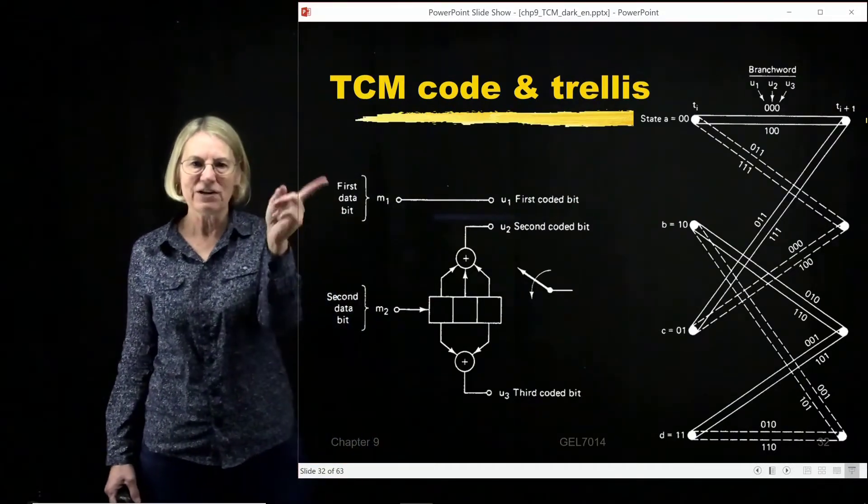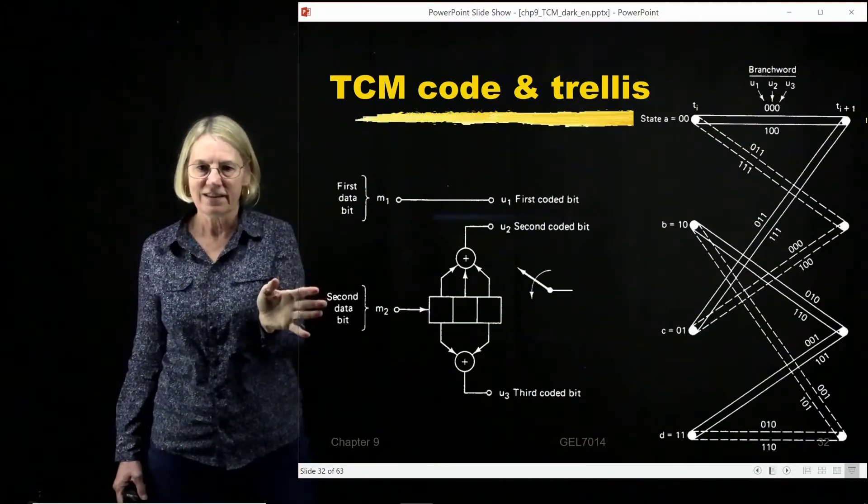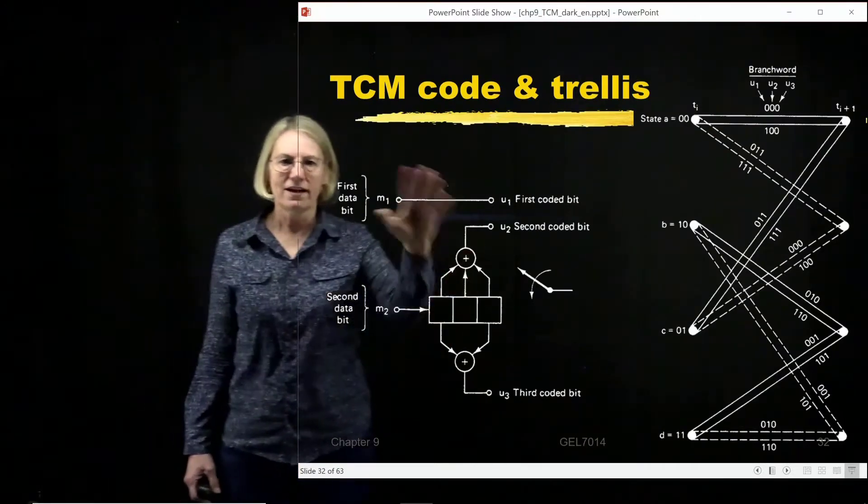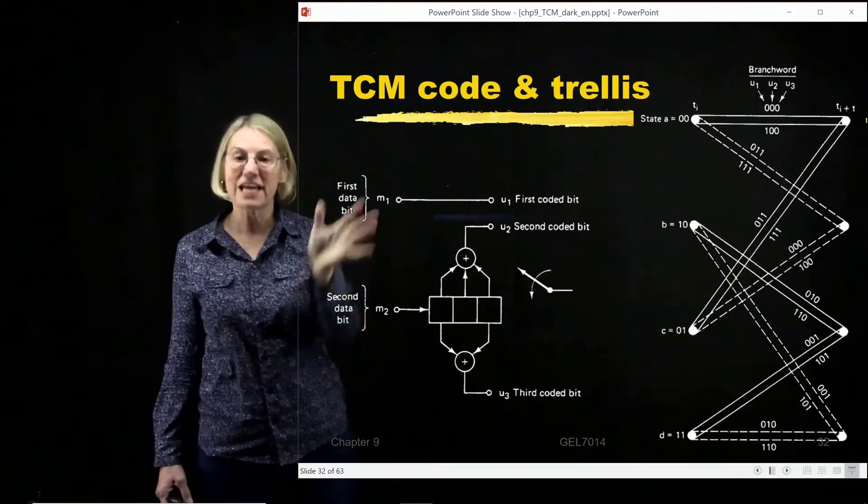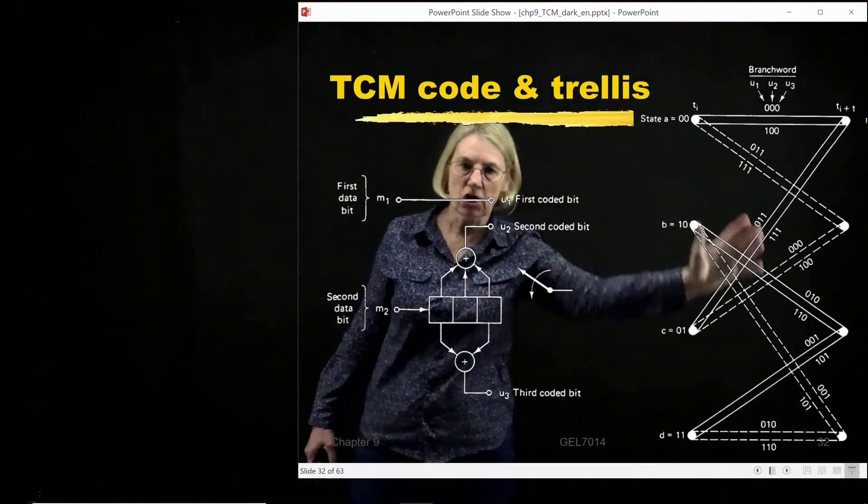So to summarize, here is the unencoded bit, the encoded bit, so this would be the implementation of trellis-coded modulation, and this would be the encoding trellis.